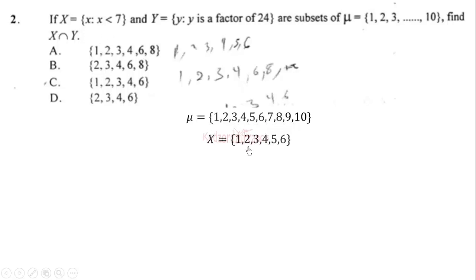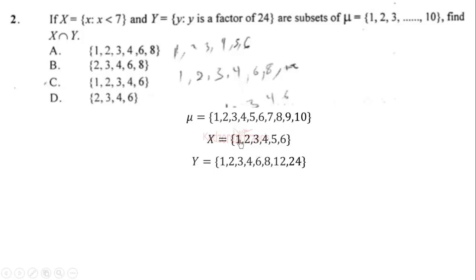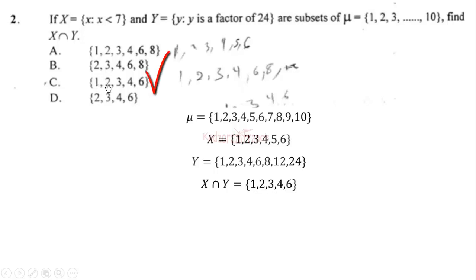Assuming x is an integer, X = {1, 2, 3, 4, 5, 6}. The factors of 24 are 1, 2, 3, 4, 6, 8, 12, 24. The numbers common to both X and Y — that is, X intersection Y — are 1, 2, 3, 4, 6.